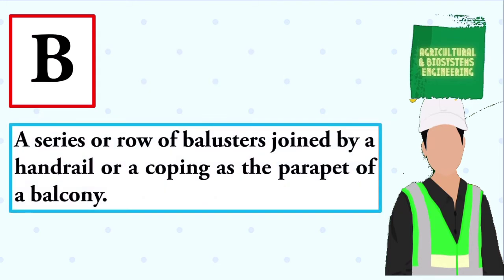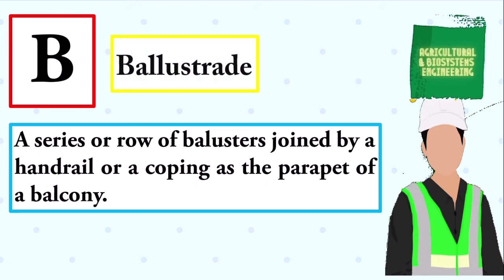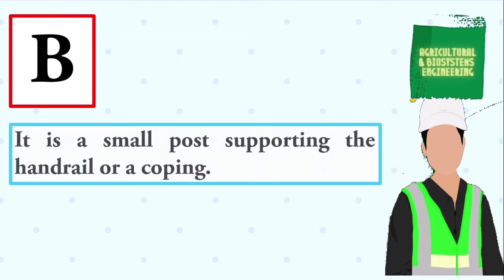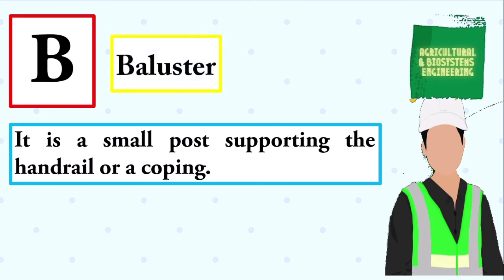A series or row of balusters joined by a handrail or a coping, as the parapet of a balcony. The answer is: balustrade. It is a small post supporting the handrail or a coping. The answer is: baluster.